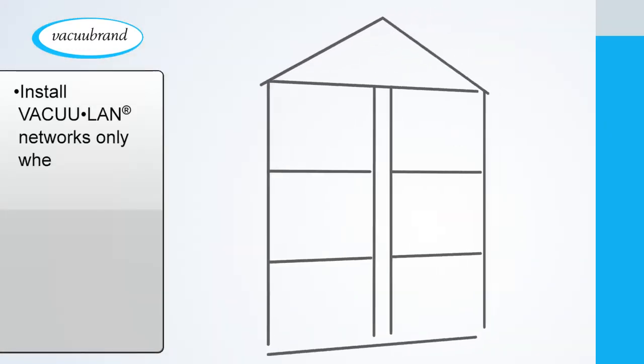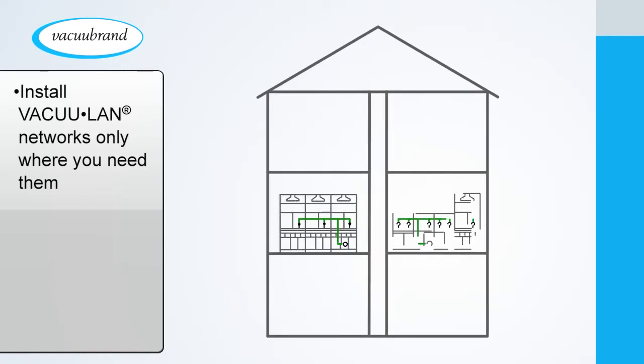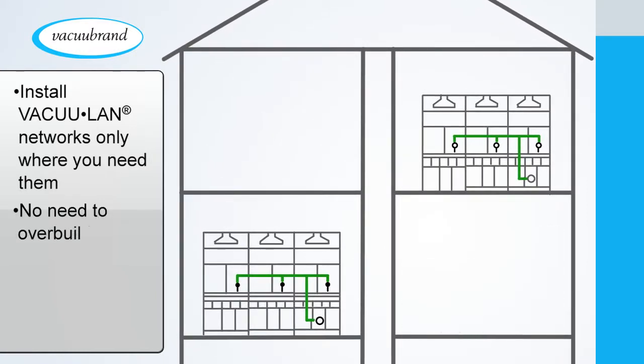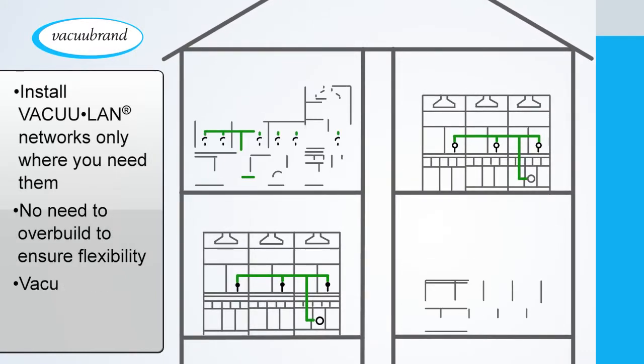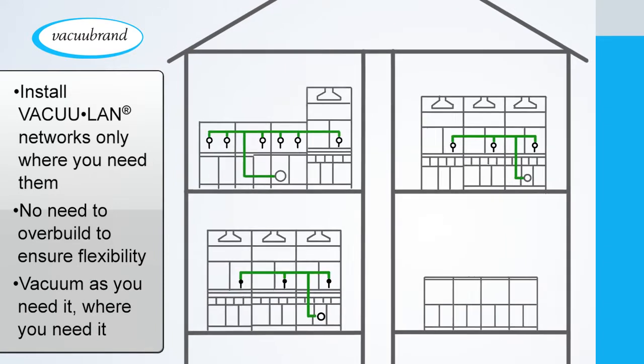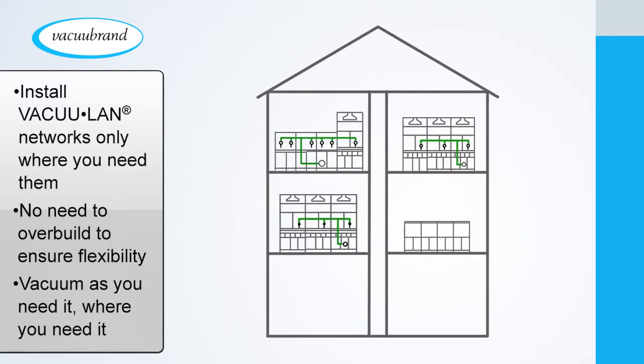You install VacuLand networks quickly with simple tools, only where you need vacuum in your building, and produce the vacuum on demand. You don't have to over-build to ensure flexibility in the future. You can always add vacuum as you need it, where you need it. It's the ideal solution for lab renovations and flexible new construction.